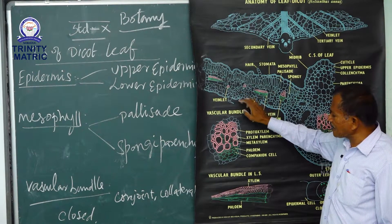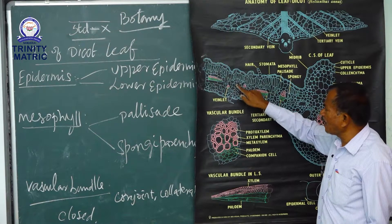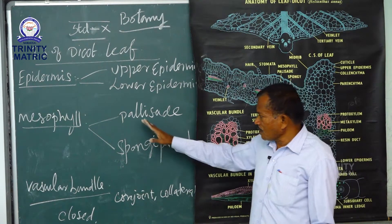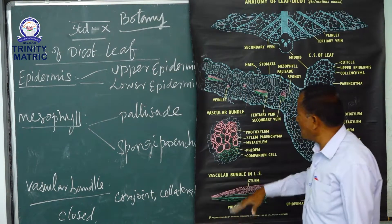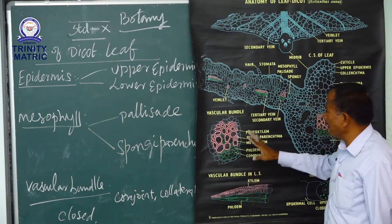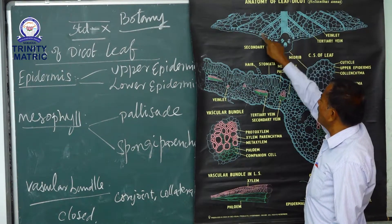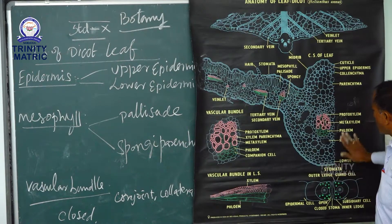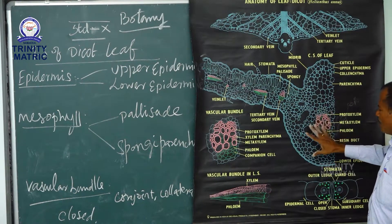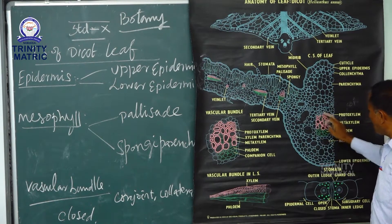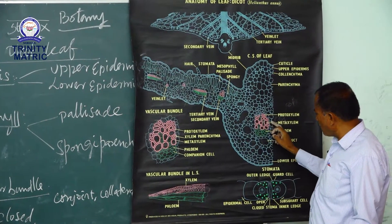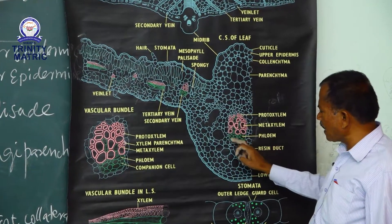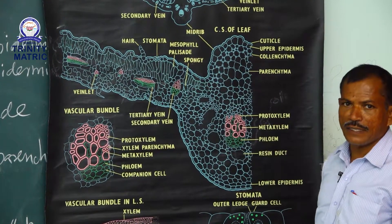Spongy parenchyma is involved in gaseous exchange between the atmosphere and the mesophyll tissue. The vascular bundle is found where the veins are located. Each vascular bundle is surrounded by thin-walled parenchyma cells called the bundle sheath. This is similar to the monocot stem, where the vascular bundle is surrounded by thin-walled parenchyma cells.